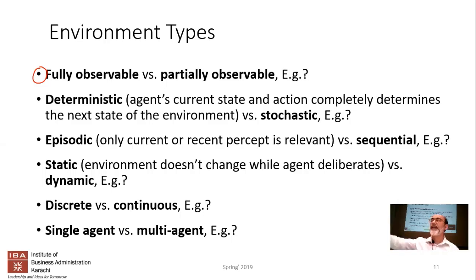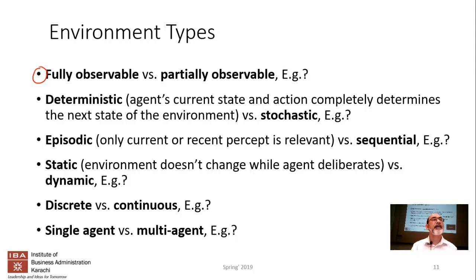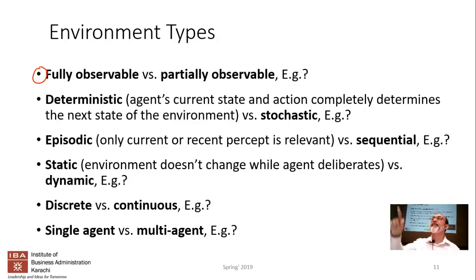Chess is deterministic — going from point A to B always happens as expected. Non-deterministic examples: the stock market, where you buy expecting it to go up but it goes down; and weather prediction, where in Pakistan if they say it'll be hot it becomes cold. These are good examples of stochastic systems.